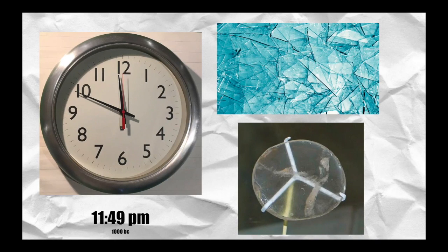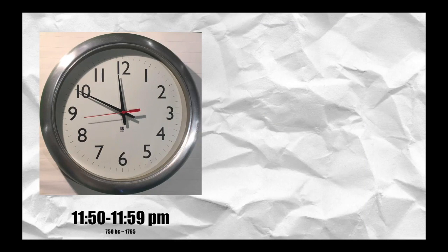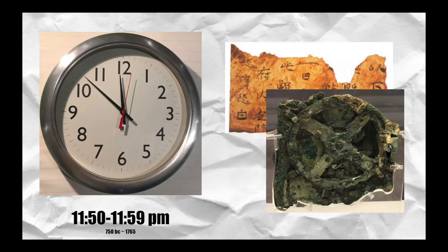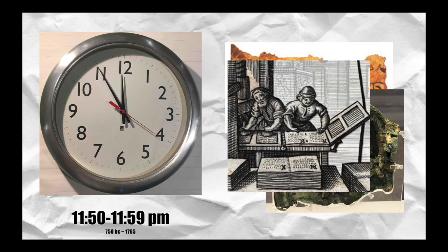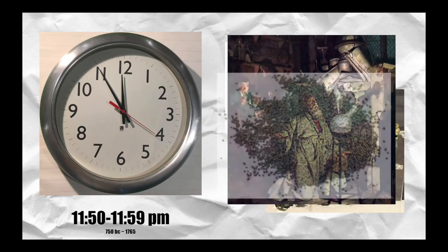Rapid development happened between 11:50 and 11:59pm. Everything that we use today, from paper, gears, to the printing press, were made, along with the earliest attempts with chemistry and alchemy in the 8th century that produced the gunpowder.